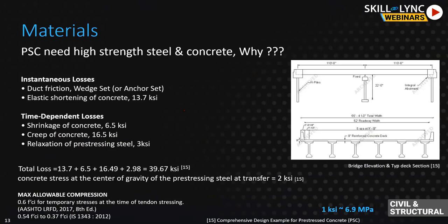Why do we need high strength materials? Here's a quick example with a simple two-span continuous bridge, 110 feet with eye girders about 5 to 6 feet deep. Looking at the forces from the FHWA comprehensive design example, for a pre-tensioned member with no duct friction: elastic shortening is 13.7 ksi, shrinkage of concrete is 6.5 ksi long-term loss, creep is 16.5 ksi, and relaxation of prestressing strand is 3 ksi - adding up to about 39.67 ksi total loss.